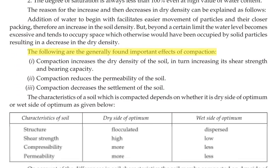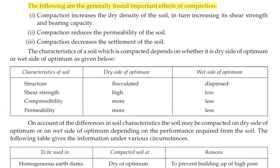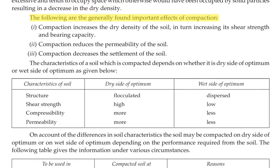The following are the generally found important effects of compaction: compaction increases the dry density of soil, in turn increasing its shear strength and bearing capacity. Compaction also reduces the permeability of the soil and reduces the settlement of the soil.